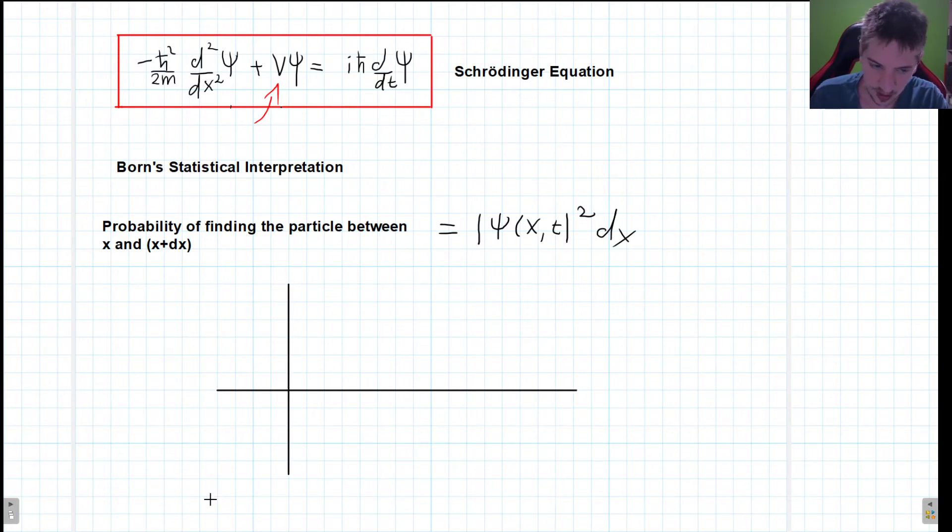So our x axis, or our horizontal axis, will be the possible positions for our particle. And our vertical axis is going to be this probability of finding our particle in some region. We can have many different shapes for our wave function. Let's say that we have the following wave function, something that goes like this.